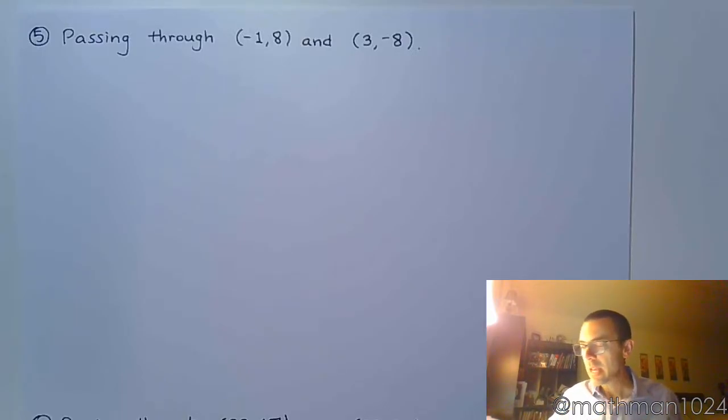In the previous four problems, every bit of information that I gave you about the line contained the slope of the line. I'm not doing that now. Now I'm just saying, here are two points. Write the equation of the line that goes through these.